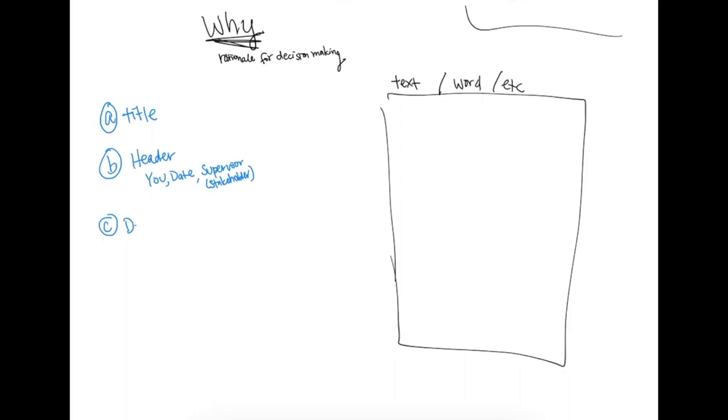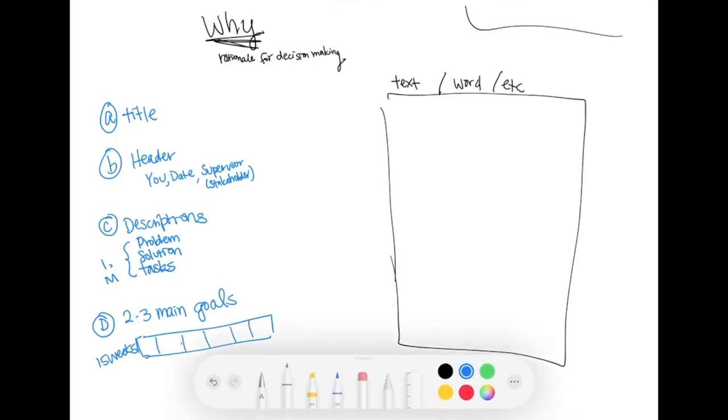Another thing you're going to have on here is descriptions - descriptions of the problem, the solution, and the tasks for completing that solution. Now it could be one project that you're working on the whole semester, it could be many problems that you're working on throughout the semester. And then finally, in order to create a really comprehensive schedule for yourself, the two to three main goals that you want to achieve that you subdivide into subtasks. And with these two to three main goals you want to think about your entire schedule of 15 weeks and how you want to divide that up for the different kinds of work that you might be working on.